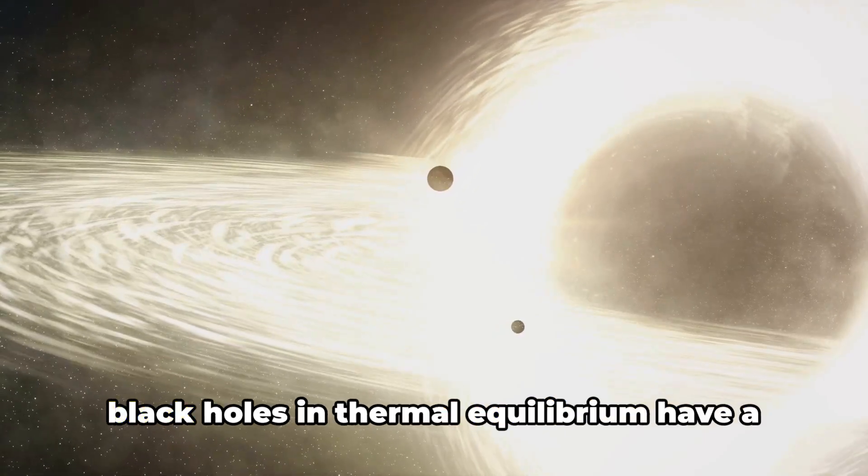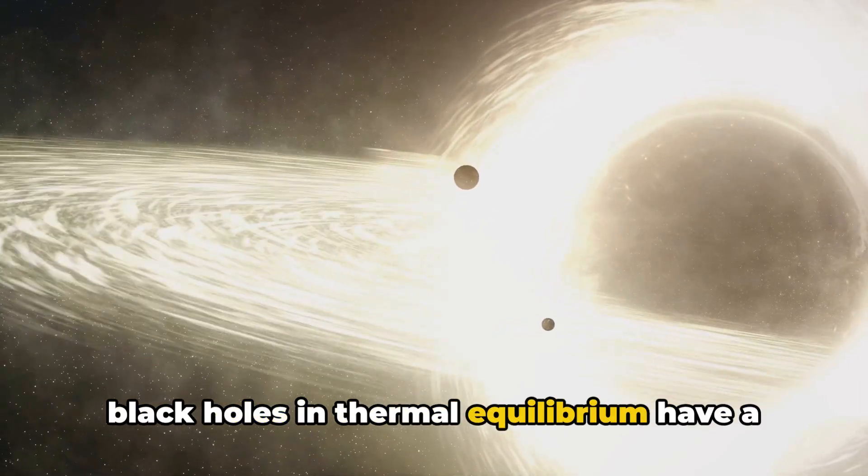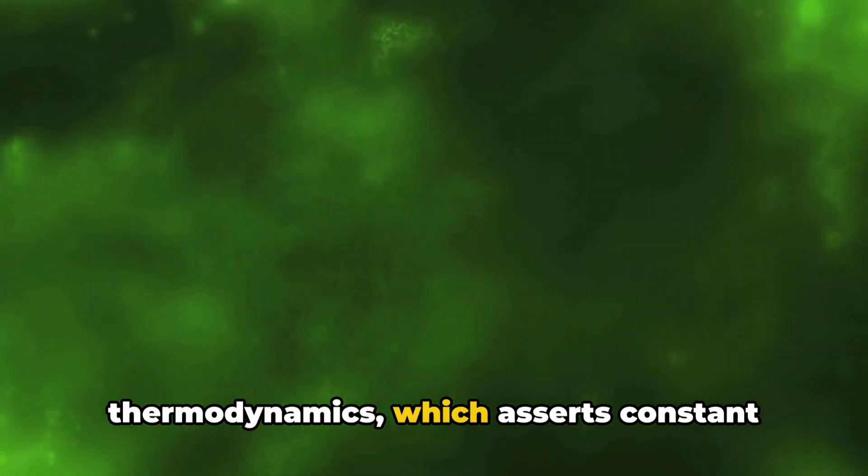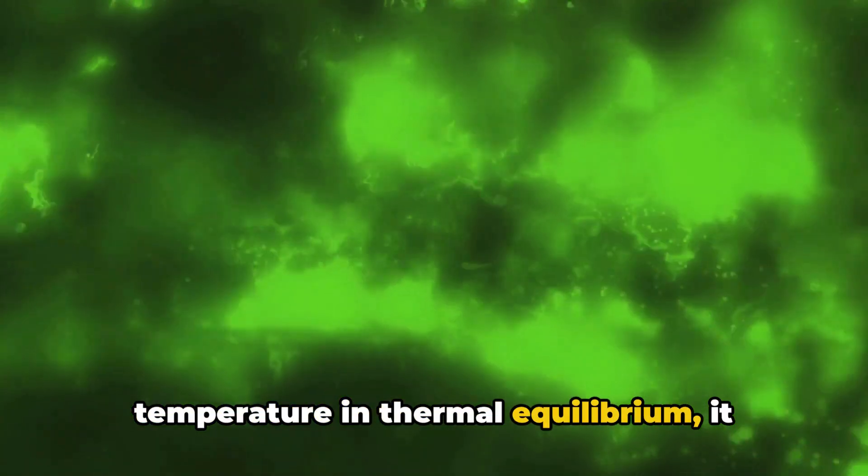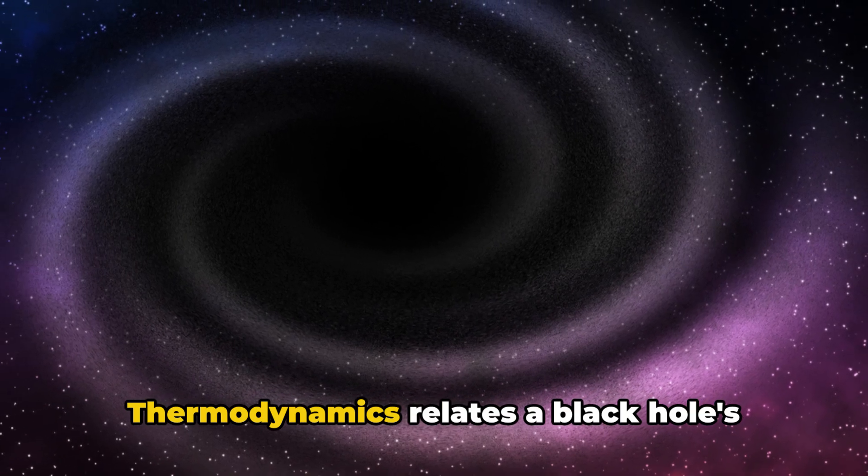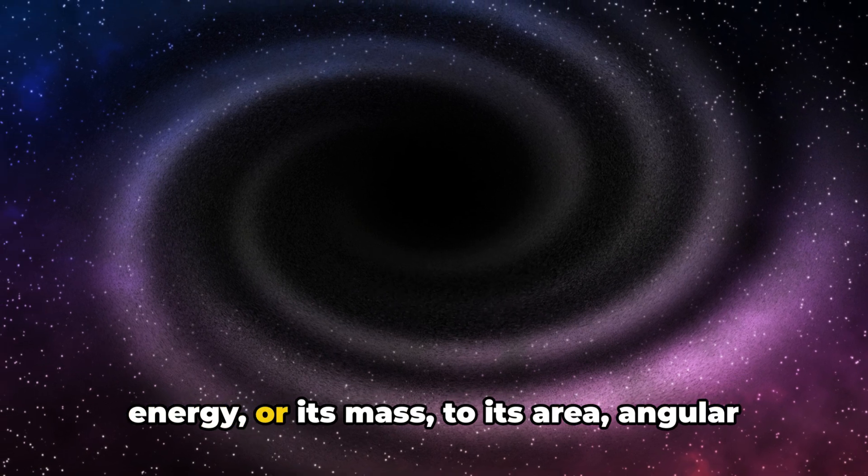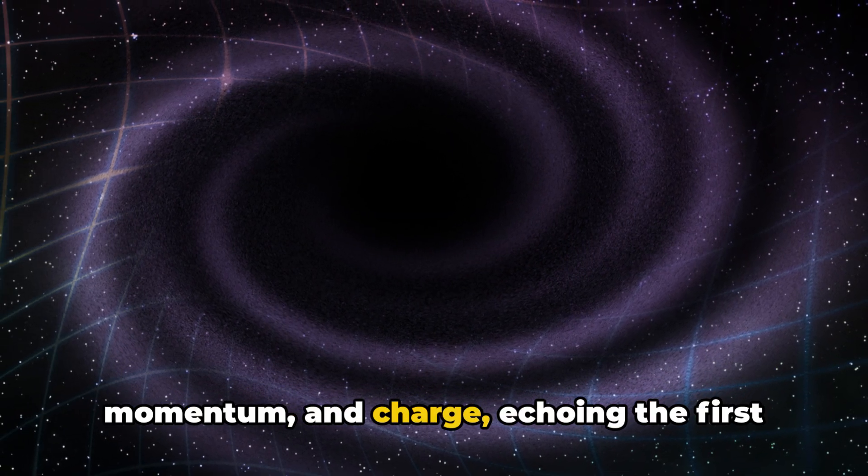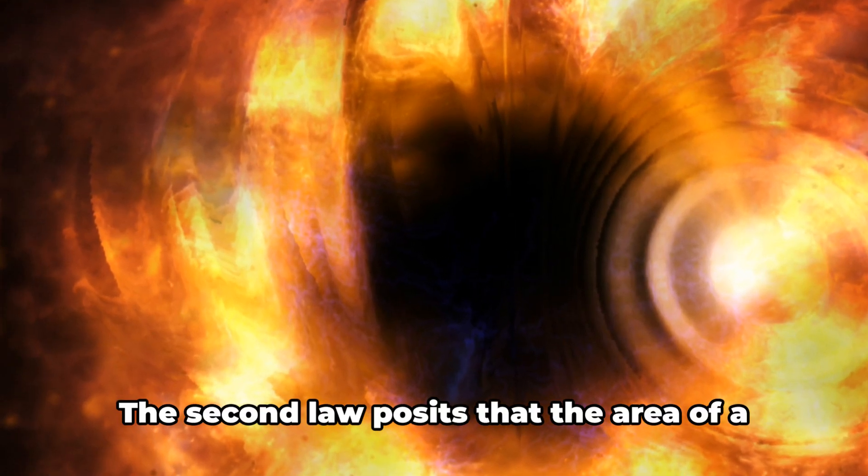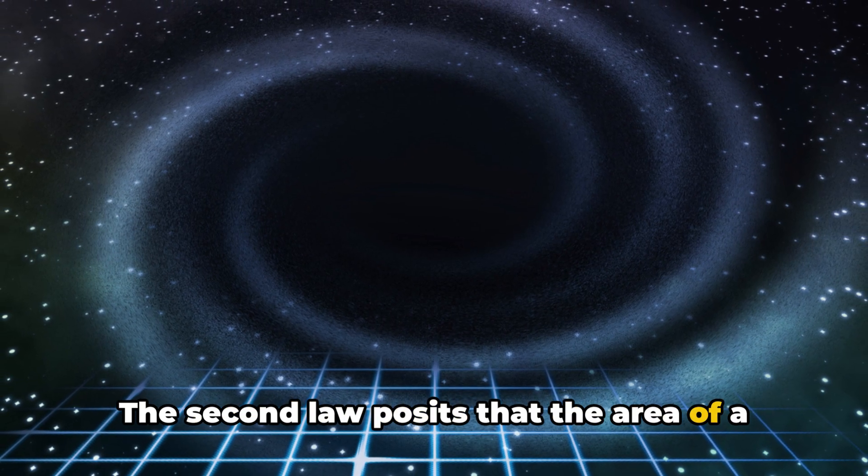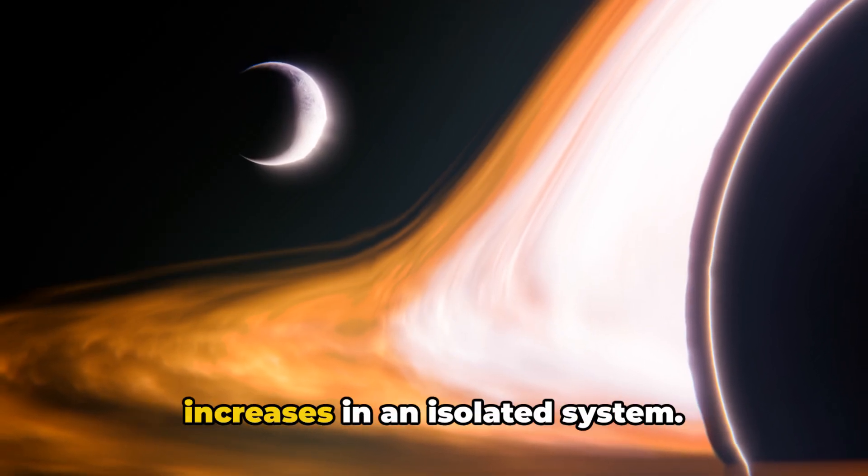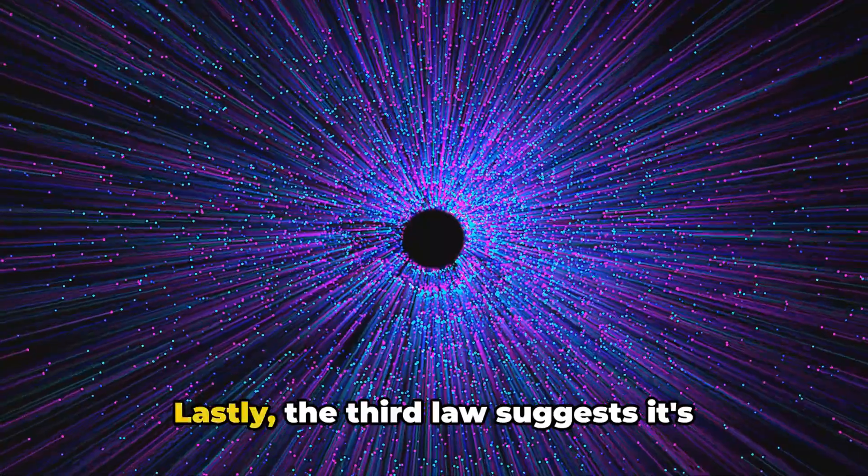The Zeroth law, for instance, states that black holes in thermal equilibrium have a constant surface gravity. Analogous to the Zeroth law of thermodynamics, which asserts constant temperature in thermal equilibrium, it sets the stage for the other laws. The first law of black hole thermodynamics relates a black hole's energy or its mass to its area, angular momentum and charge, echoing the first law of thermodynamics that links energy, heat and work. The second law posits that the area of a black hole can only increase, not unlike entropy in thermodynamics, which only increases in an isolated system. Lastly, the third law suggests it's impossible to achieve a black hole with zero surface gravity, mirroring the unattainability of absolute zero temperature.